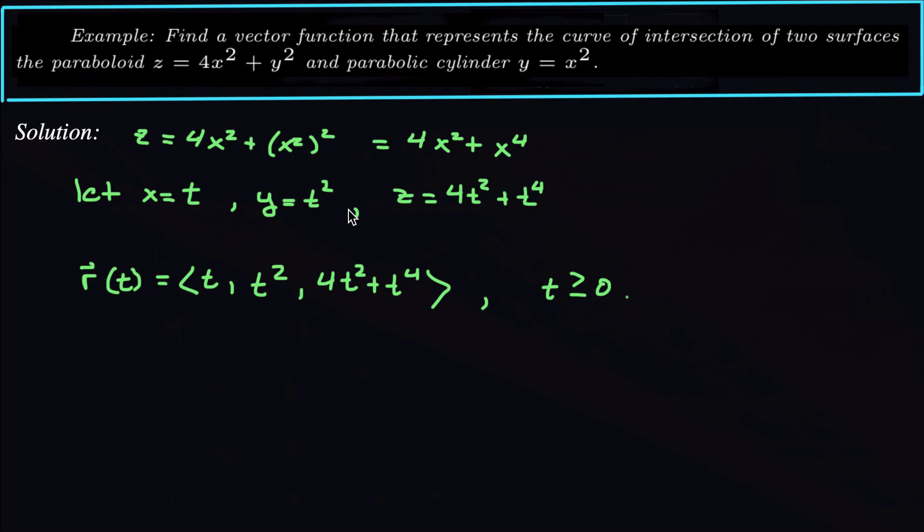then you might let x equal the radius of the circle times cosine of t, and then y equal the radius of the circle sine of t. But it just depends on the problem. But here we got all our functions of x, so we can just say that that's going to be the way we represent this vector function.